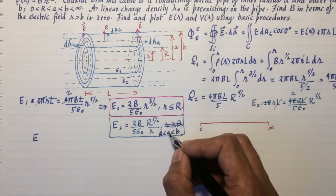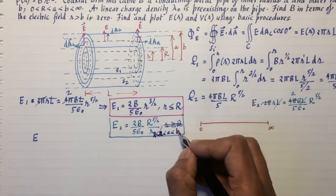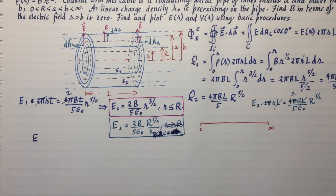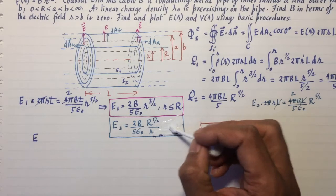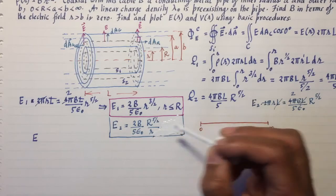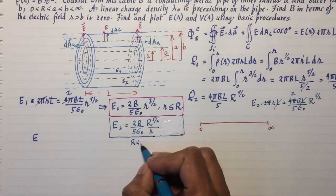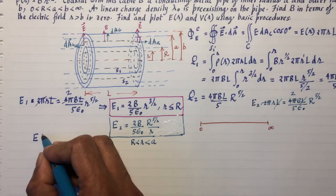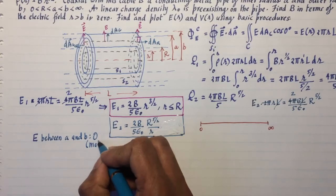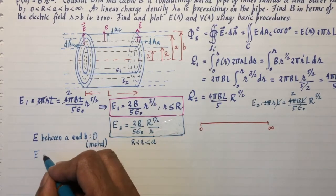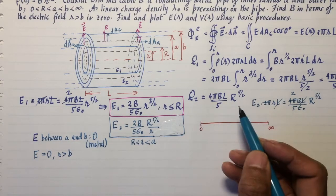And this is valid for r bigger than or equal to R, but less than A. So I should probably write this as R less than r less than A. And the electric field in the metal is 0. So E in the metal is 0, and the electric field outside is also 0. And that's how we have arranged it. We have arranged for the total charge enclosed outside to be 0.